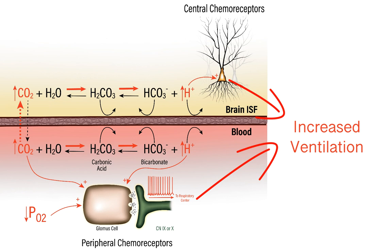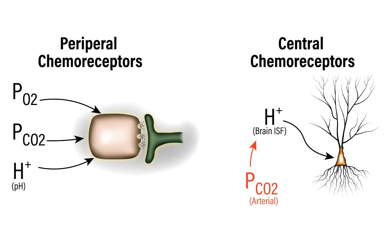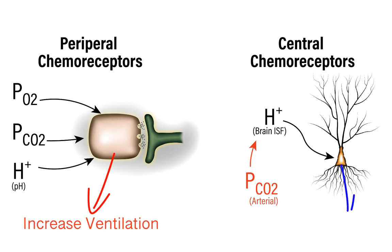Under most circumstances, the central and peripheral chemoreceptors work together to appropriately modulate ventilation in response to various blood gas challenges. However, there are special circumstances where the two sets of chemoreceptors are not aligned — one set has a drive to increase ventilation while the other has a drive to decrease ventilation. Examples include metabolic acidosis or ventilation in high altitude environments. Check out other videos on these topics for more detail.